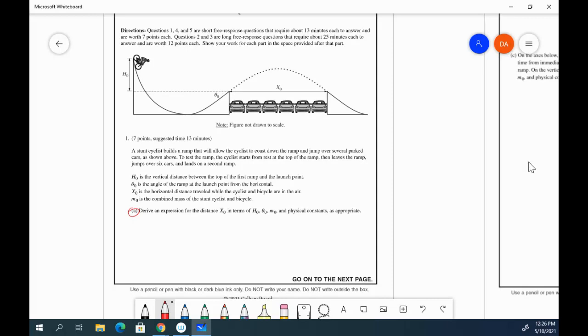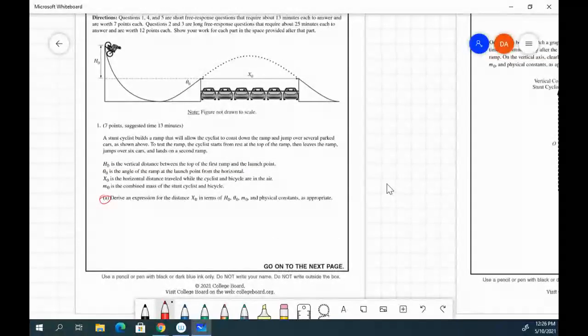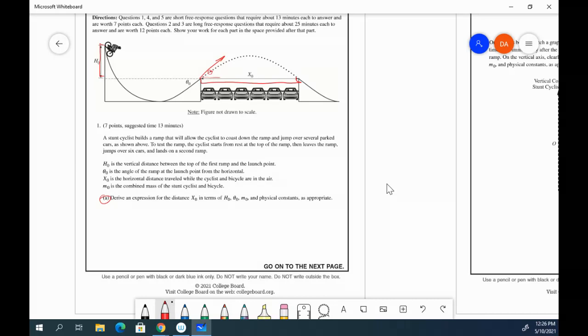So this first part is looking for you to derive an expression for the distance x0. So we've got this distance here that we're looking for. We're given this height here, and we're given this angle theta. Basically, we know this bicycle is going to come down this ramp, launch off, and this angle is given, but that's kind of the same as this angle, opposite interior angles there. So the nice thing is that you're given this height, and that's a value you're able to use in these equations.